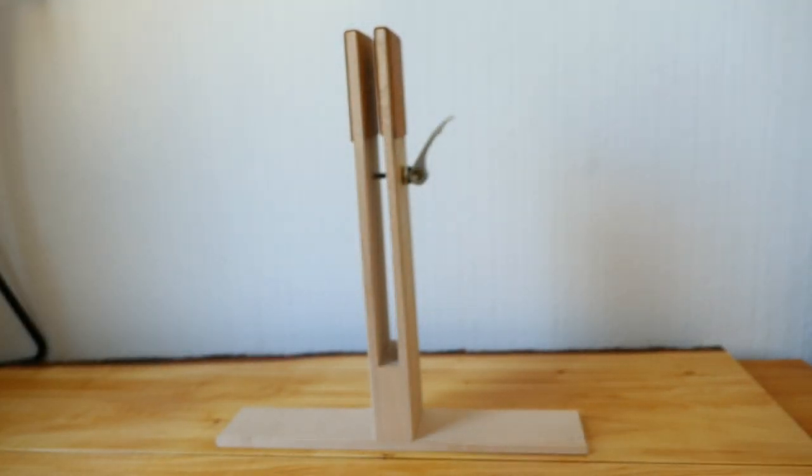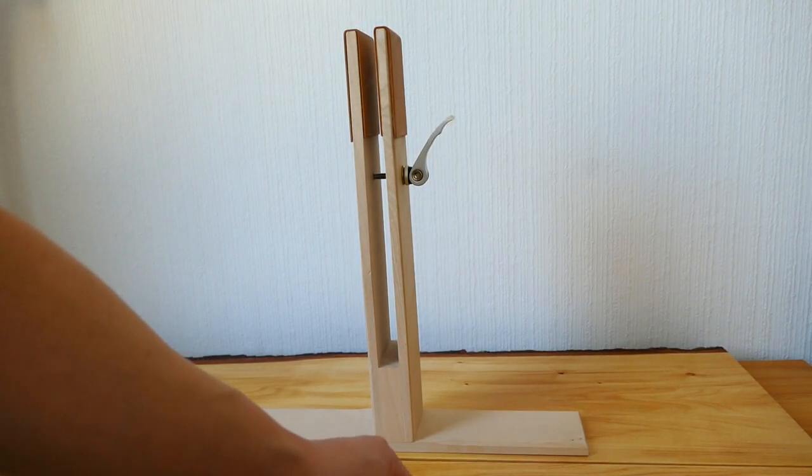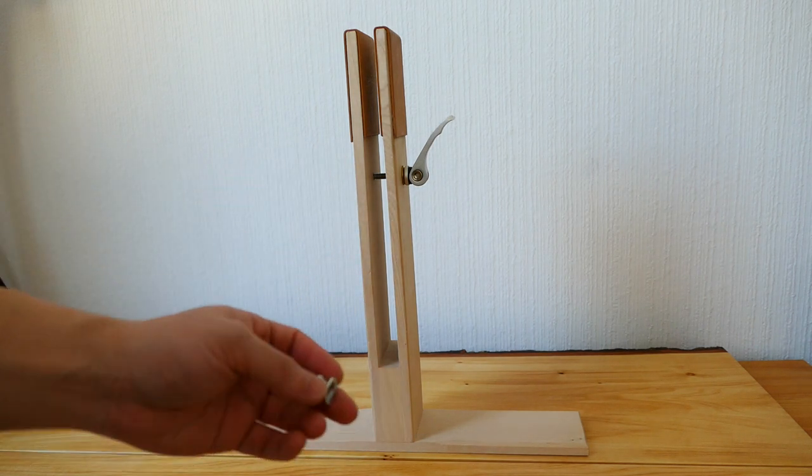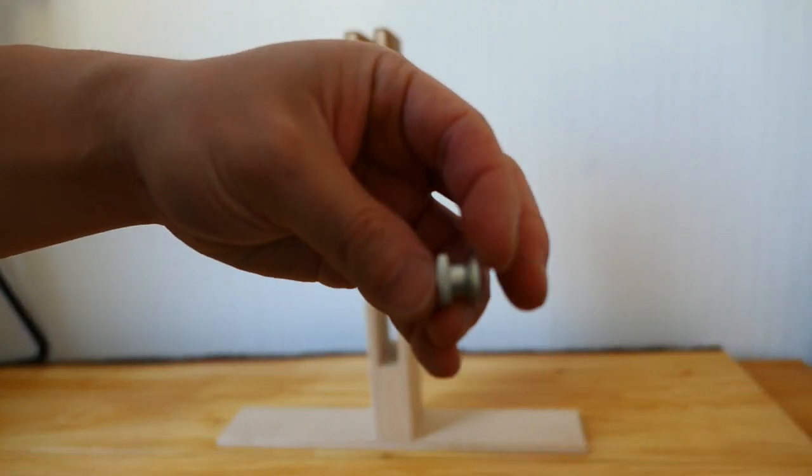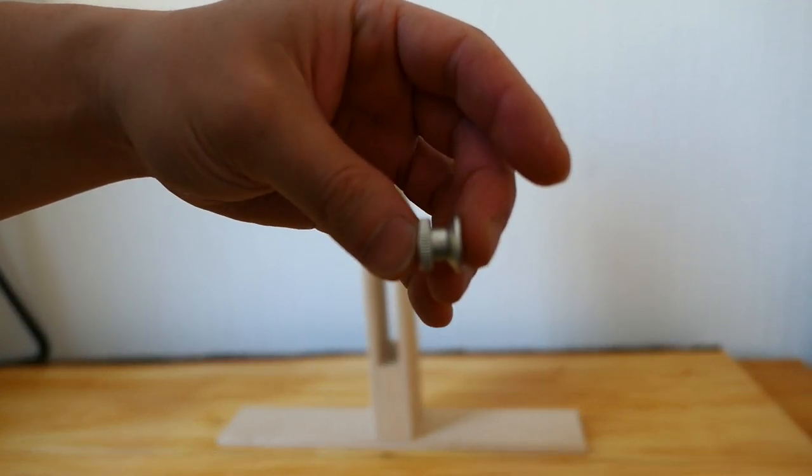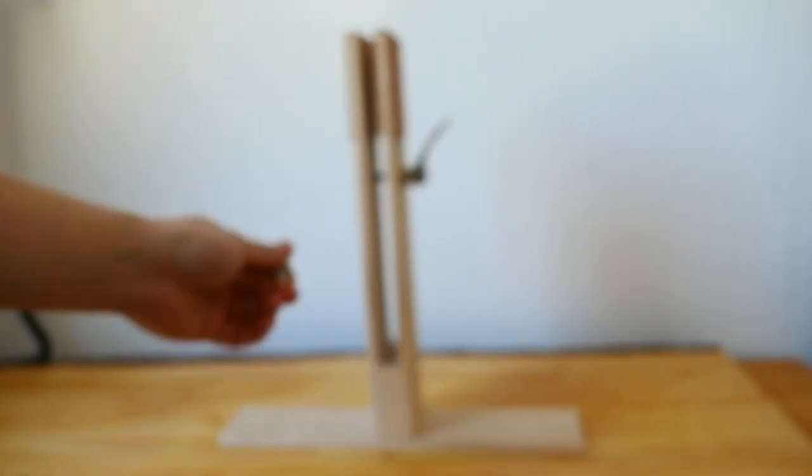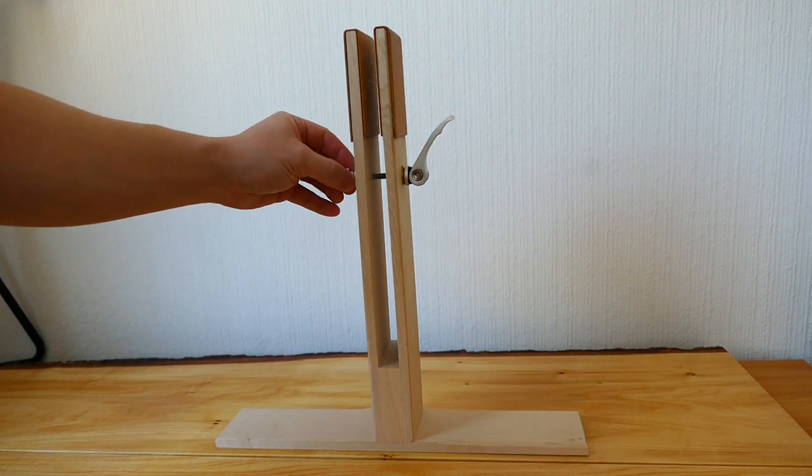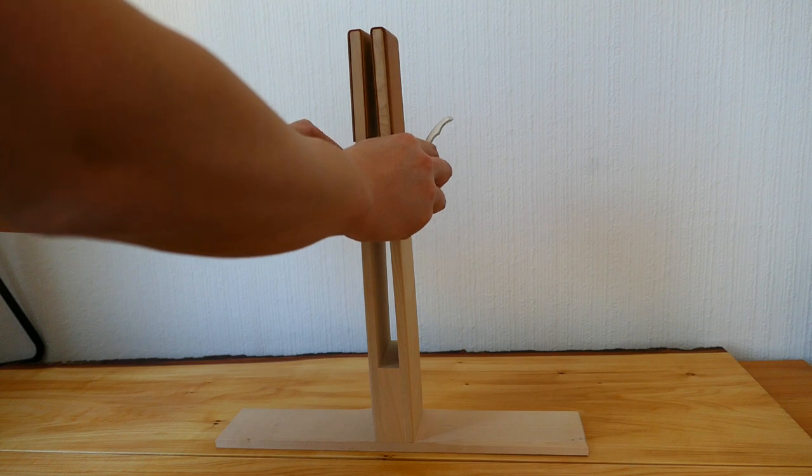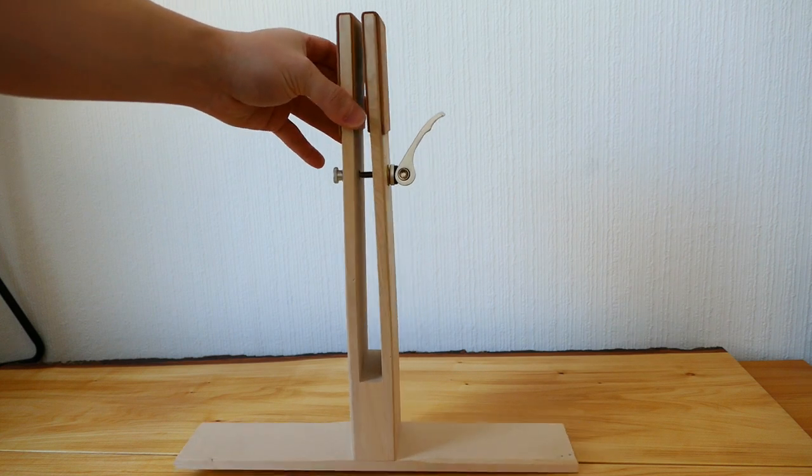And then I take another washer, any washer. Now place it here. And then I will place my other part like this into the clamp. I pre-tighten a little bit so that the gap is a little closer already.